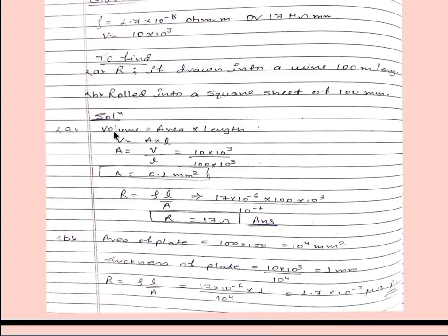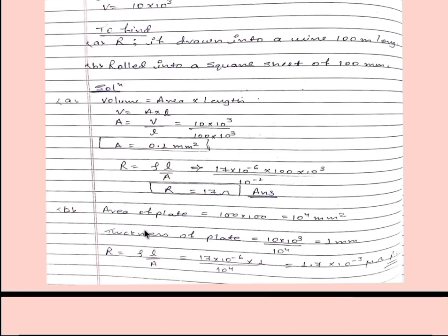For solving part A, we have volume given and length given. From here we can get area. V is equal to A into L, area will be 0.1 mm square after calculating this. We know the formula R is equal to rho L by A. We will put the value of rho, L and A and we will get R is equal to 17 ohm and it will be our answer.